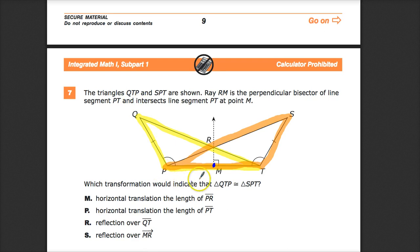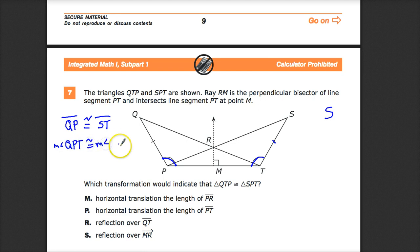I need to know which transformation would indicate that triangle QTP is congruent to triangle SPT. How can I find congruence? I can find side-angle-side, but what could I use? Well, I know these things are congruent, so QP is congruent to ST. So at least I have side. P is marked with the same line as angle T, so angle QPT is congruent to angle STP. So that's some angle stuff I can work with.